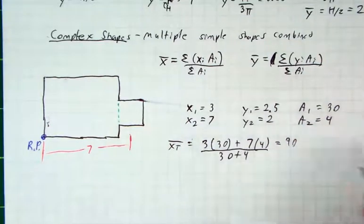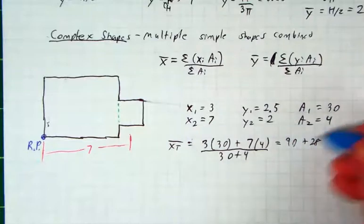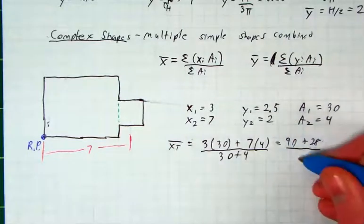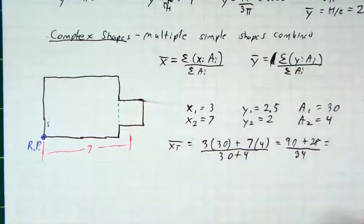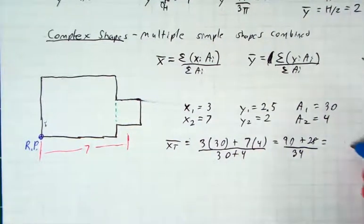I'll spare you the math. Three times 30 is 90. Seven times four is 28. 30 plus four is 34. If you take the time to calculate this in your handy-dandy calculator, you would get an x total of 3.5.